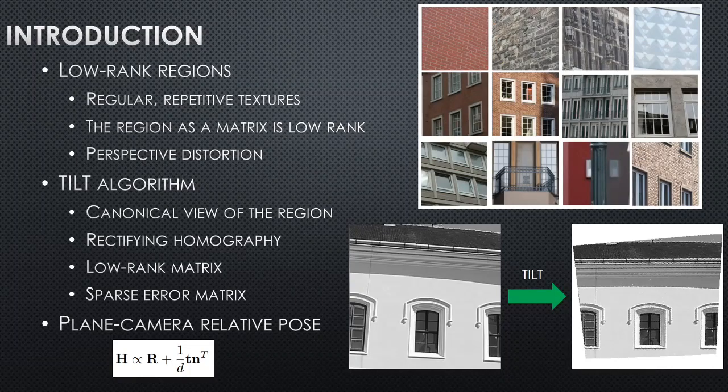Let's begin with low-rank regions. These regions are regular, repetitive textures which you can usually find in man-made environments. Generally speaking, a region is low-rank if the region as a matrix is low-rank. But in practice, the images of these regions aren't exactly low-rank because of perspective distortion, as you can see in the figure in the top right corner.